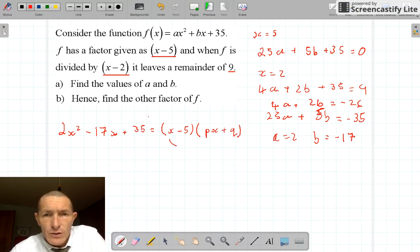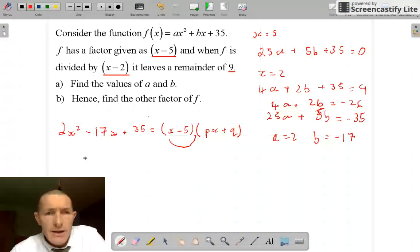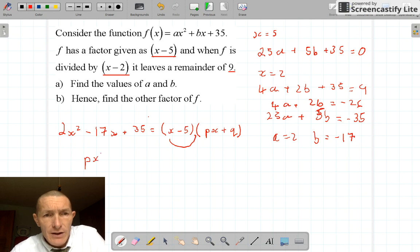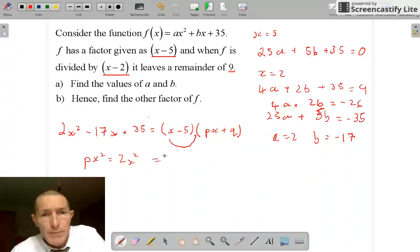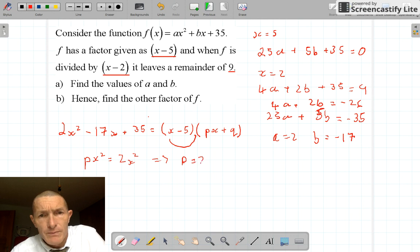Now basically these two are going to multiply together: x and px to give me px squared. And the only x squared I've got is 2x squared, so therefore I know that p equals 2. Similarly, this 5 is going to be multiplied by this number at the end, so minus 5q gives me 35, so q is minus 7.